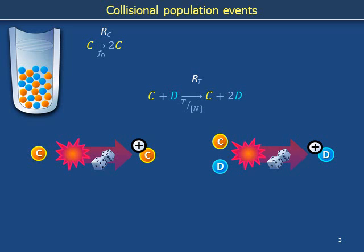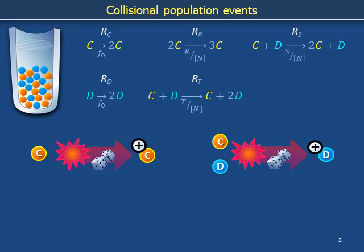We have illustrated merely two of the reactions that might proceed in this model. On occasion a denim cell might duplicate on its own. In this model we assign this reaction the same rate coefficient as for the analogous reaction in which a copper cell duplicates by itself. On occasion a collision between a copper cell and a denim cell might trigger a copper cell to duplicate; for this reaction we name the rate coefficient S over bracket N. Sometimes the result of a collision between two copper cells will be the duplication of one of the copper cells, and for this reaction we use the rate coefficient R over bracket N. Finally, the collision of two denim cells might occasionally trigger one of the colliding denim cells to duplicate. The rate coefficient for this reaction is called P over bracket N.